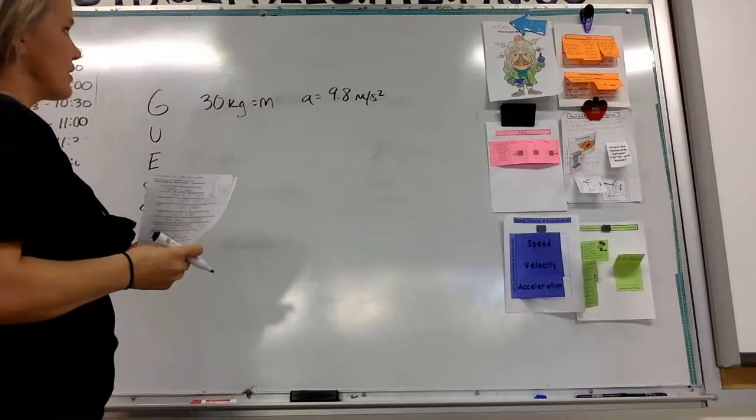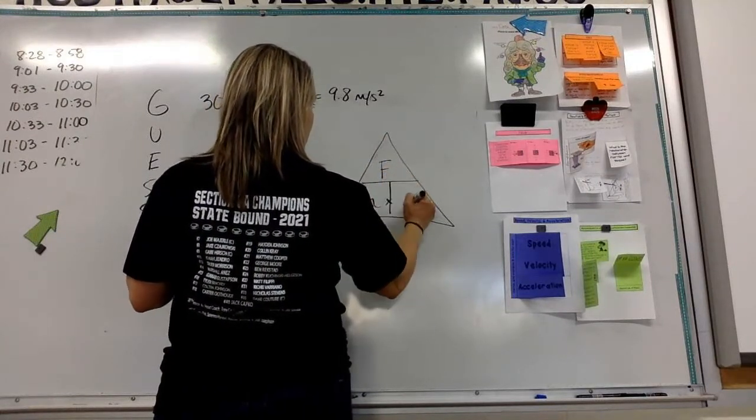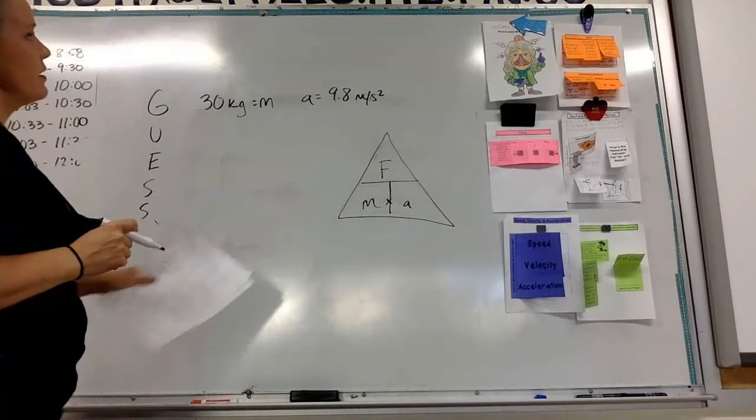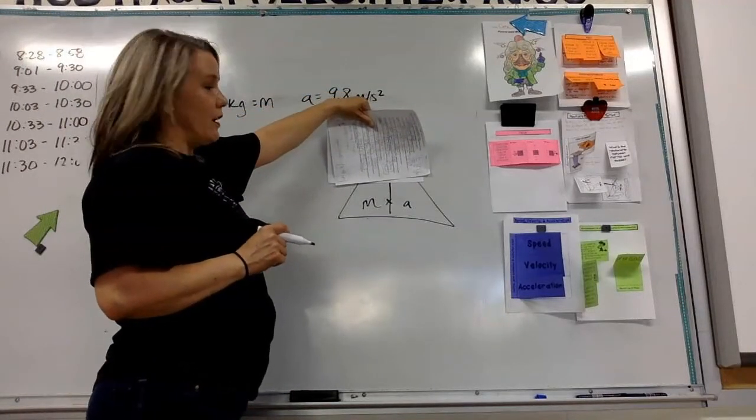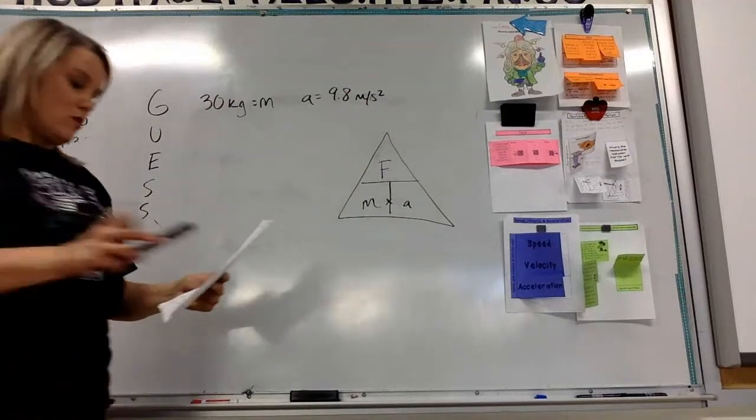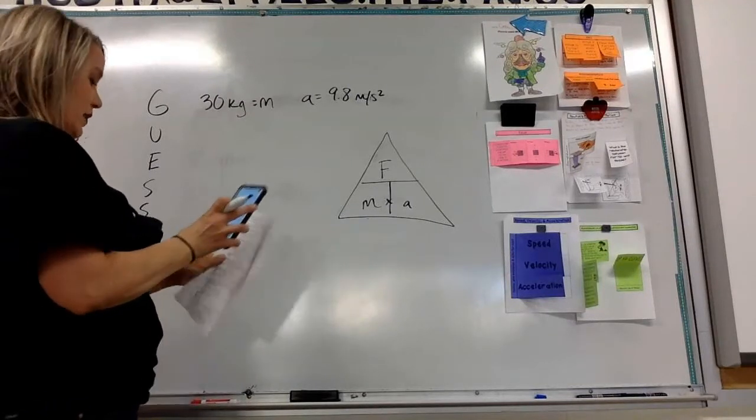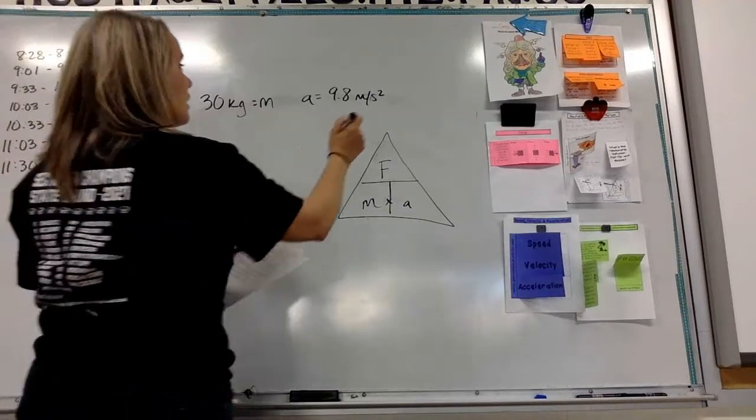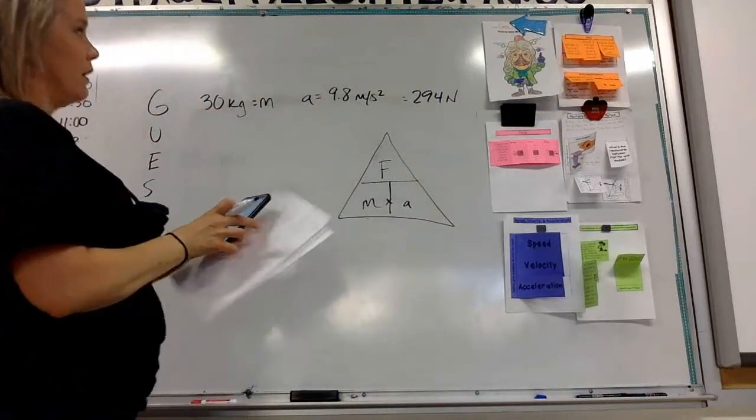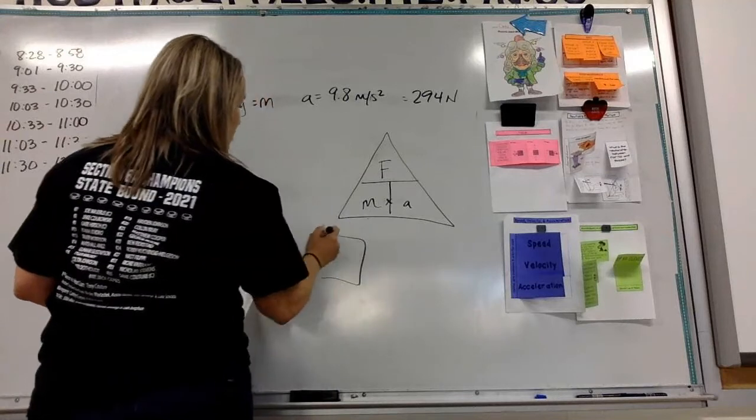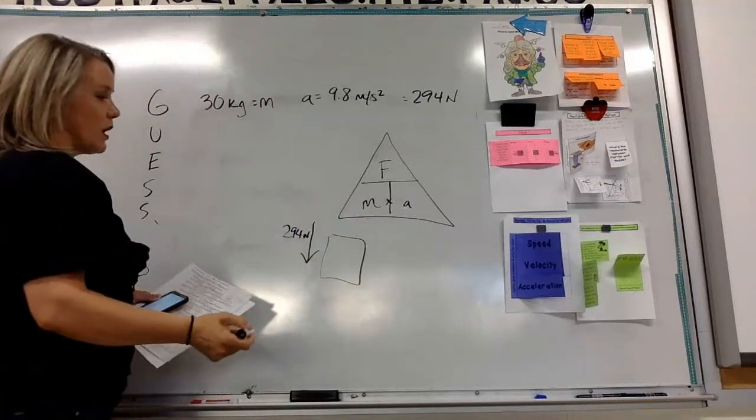So we've got to figure that out first. And we know looking at our triangle that if we know the mass and we know the acceleration, but we don't know the force, we just have to multiply them together. So I am going to take 30 times 9.8 and I'm going to get 294 newtons. That is falling downwards.